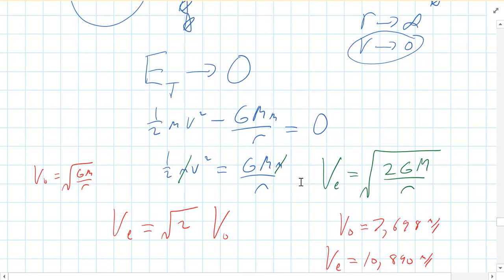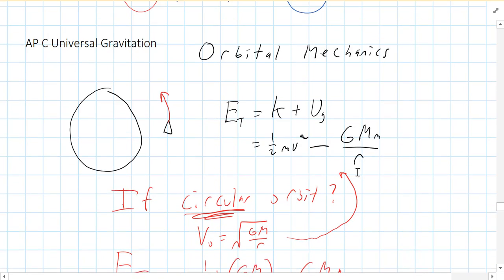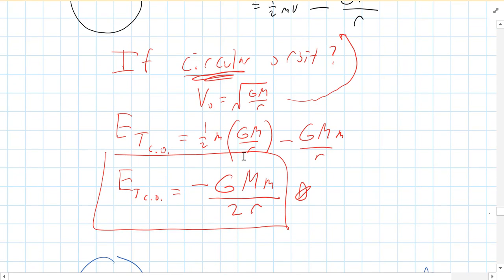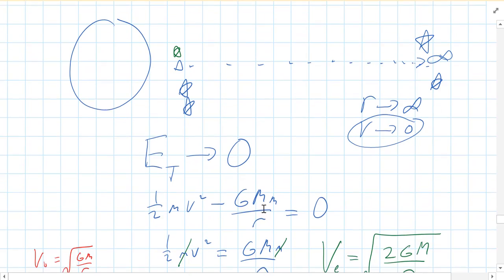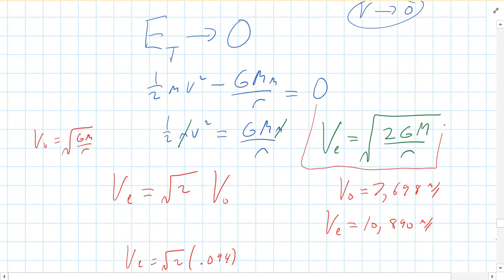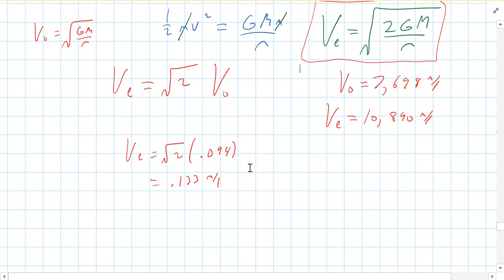So we have a couple of things going on here. We have the total energy in orbit — kinetic plus potential energy. If you're in a circular orbit, we have a simplified equation for total energy. And if we want to escape the object, there is an equation for escape velocity — it's just root 2 times the circular orbit velocity equation. In the next video, we'll actually plug and chug some numbers, and I would really suggest you try that out to make sure you're able to do the calculations. I'll see you in that next video — have a good one.